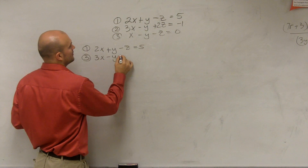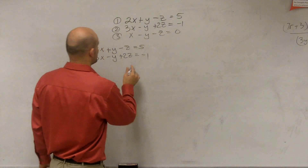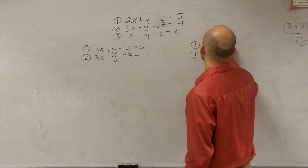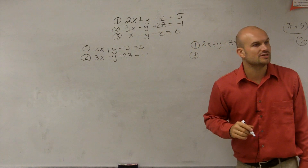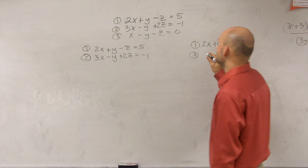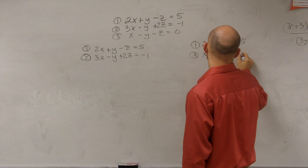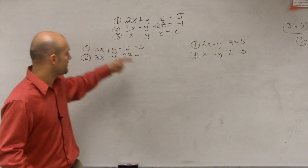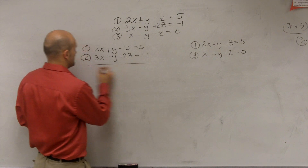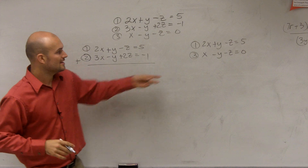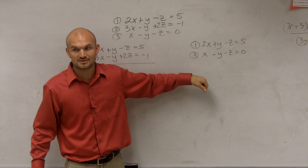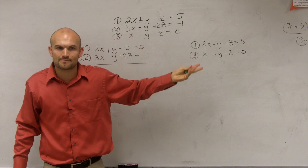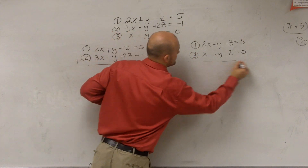So I'm going to use the elimination method to add equation one and equation two, and then do the same for equation one and equation three. Some of you might ask why I don't add equation two and equation three. Remember, our purpose for the first step is to create two equations with two variables. Adding equation one and two gives one equation with two variables, and adding equation one and three gives another. So we already have two equations with two variables — you could use two and three, but it's not necessary.